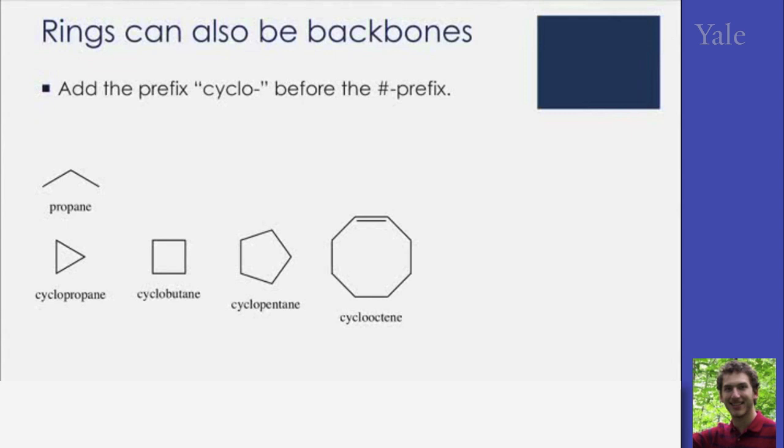Now, I just want to point out, unless you have a very large ring, you're not going to have an E-type double bond, so it is often not specified. We also don't have to specify the number of the bond, where the double bond is, because any rotation of this molecule is going to end up being the same structure.